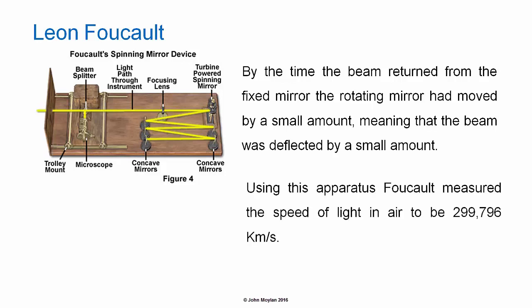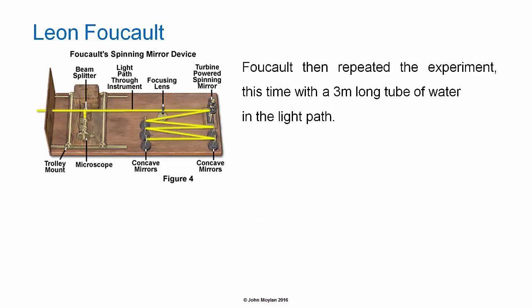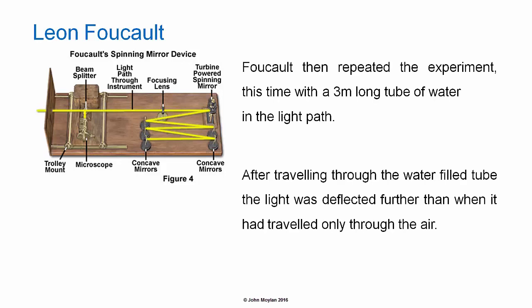Using this apparatus, Foucault measured the speed of light in air to be 299,796 kilometers per second. Foucault then repeated the experiment, this time with a 3 meter long tube of water in the light path.